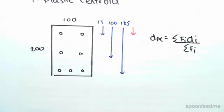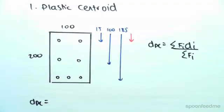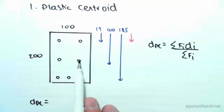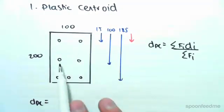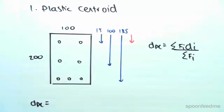So we're going to go ahead and calculate the distance of the plastic centroid. So, essentially, we're going to have four different components. We're going to have this layer of steel, this layer of steel, this layer of steel, and then also the entire area of concrete, okay? So that's how we're going to do it.